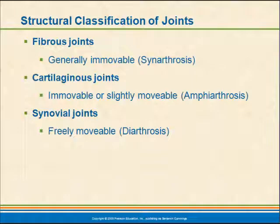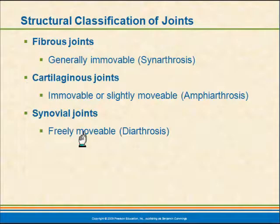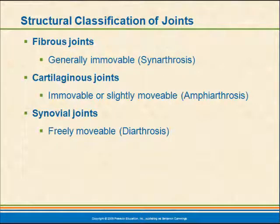Fibrous joints are generally immovable — those are synarthroses. Cartilaginous joints are immovable or slightly movable — those are the amphiarthroses. And synovial joints, which are freely movable, are the diarthroses. All freely movable joints — all diarthroses — are synovial joints.